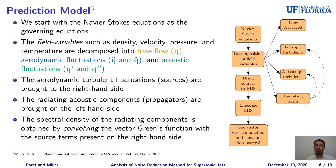Now I will discuss a brief overview of the prediction model, which is used for identification of the source term as well as development of the statistical model. We start with the Navier-Stokes equations as the governing equation and then use a unique decomposition approach proposed by Dr. Miller, decomposing the field variables into time-average base quantity, fine-scale isotropic fluctuations, large-scale anisotropic turbulent fluctuations, and the radiating acoustic terms. We bring the sources — the base flow, fine-scale fluctuations, and large-scale fluctuations — to the right-hand side, linearize the left-hand side, and use a vector Green's functions approach. We can then find the spectral density of pressure using the convolution integral of the vector Green's functions with the source terms.